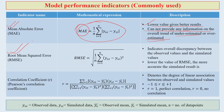Root Mean Square Error (RMSE) is a very popular indicator for testing modeling performance. RMSE indicates the overall discrepancy between observed values and simulated values. Lower the value of RMSE, the more accurate the simulated result.